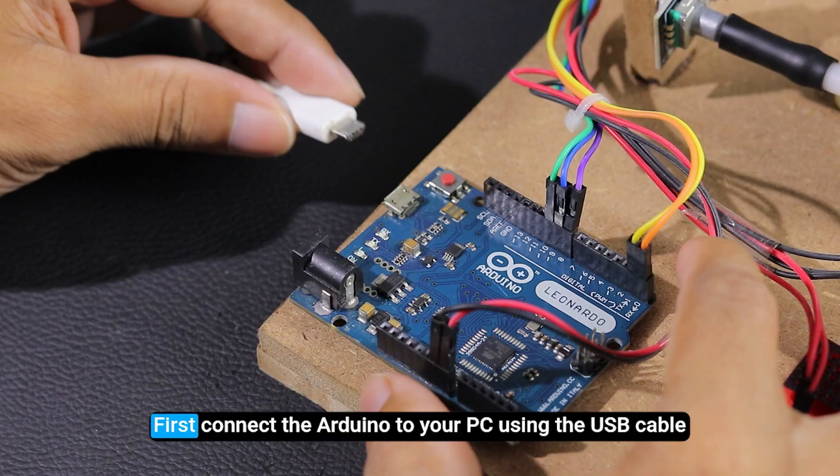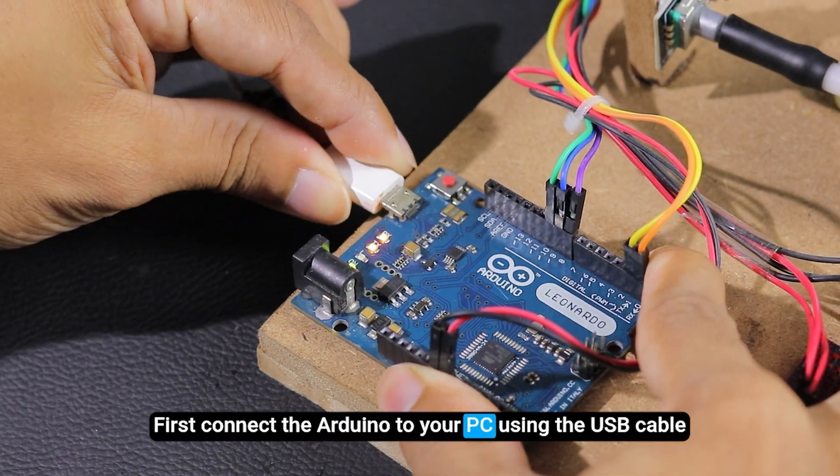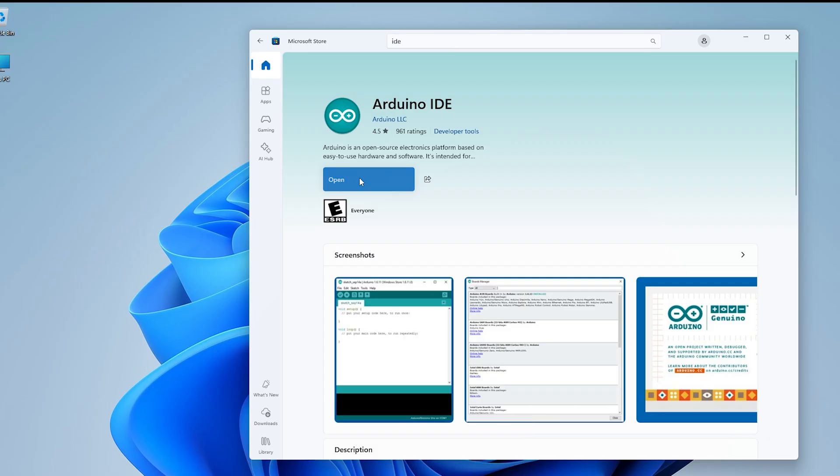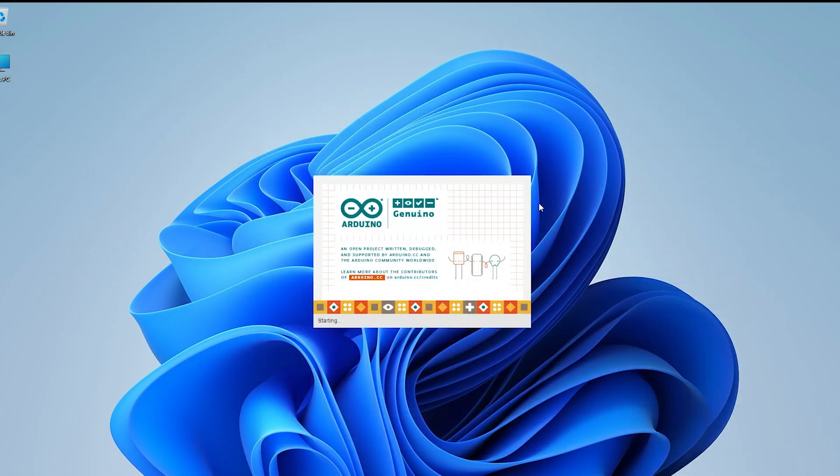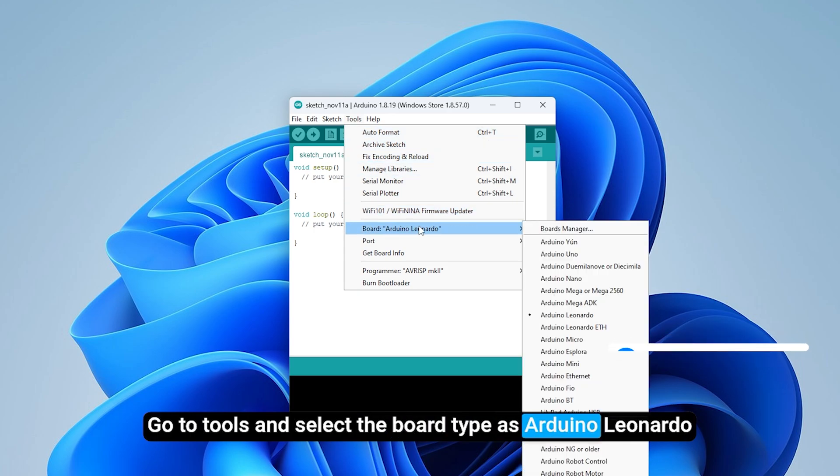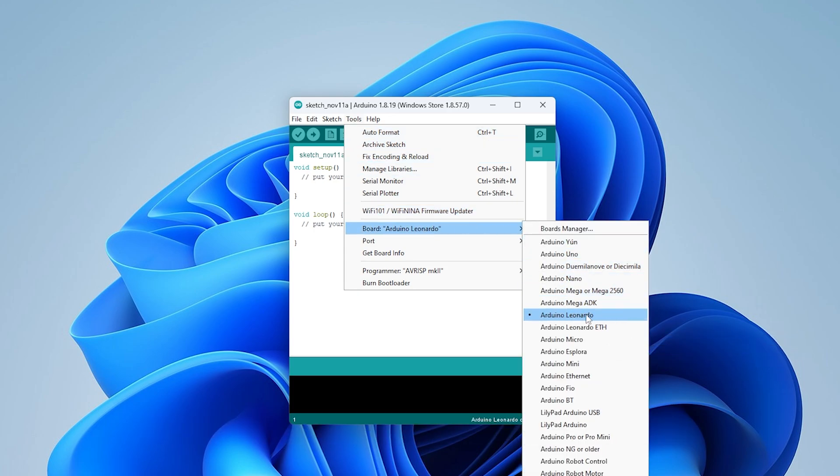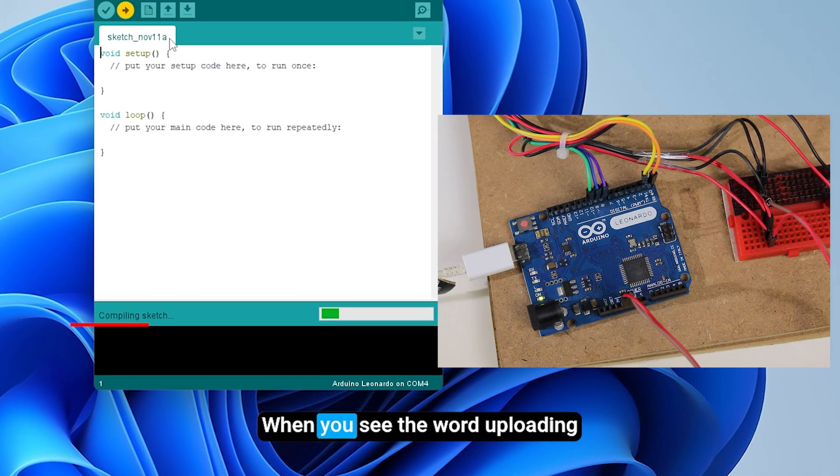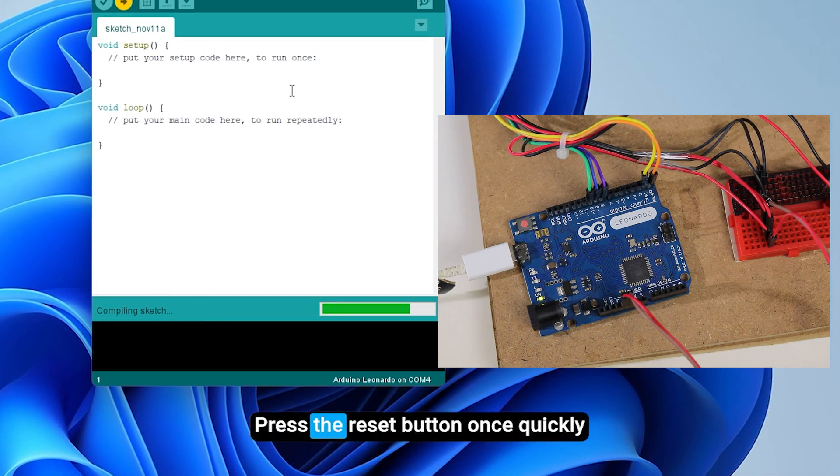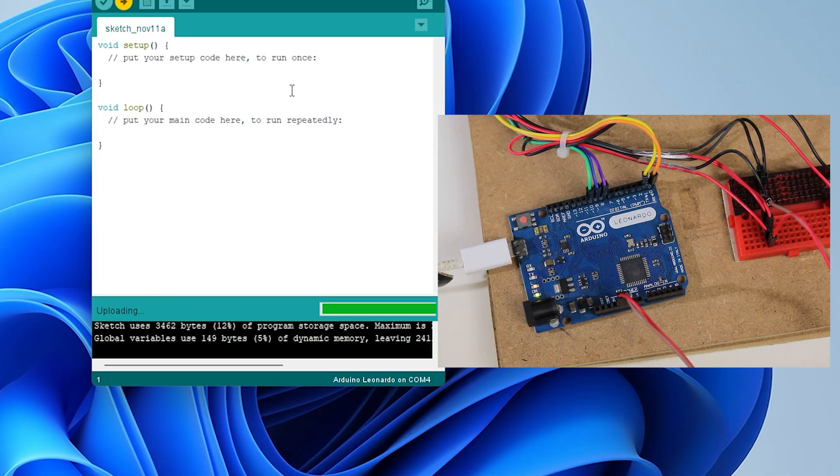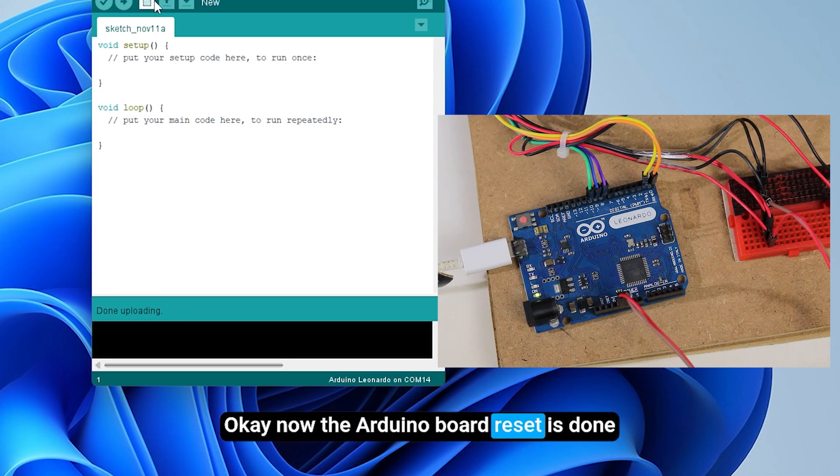Here is how you do it. First, connect the Arduino to your PC using the USB cable. Open the Arduino IDE. Go to Tools and select the board type as Arduino Leonardo. Now click Upload. When you see the word Uploading, press the Reset button once, quickly. OK, now the Arduino board reset is done.